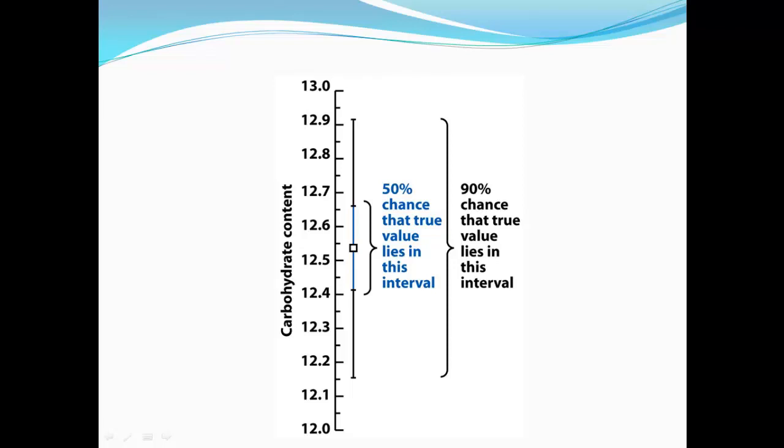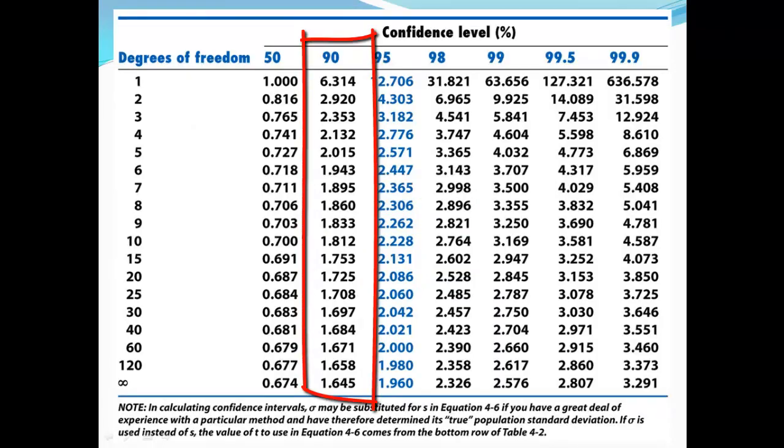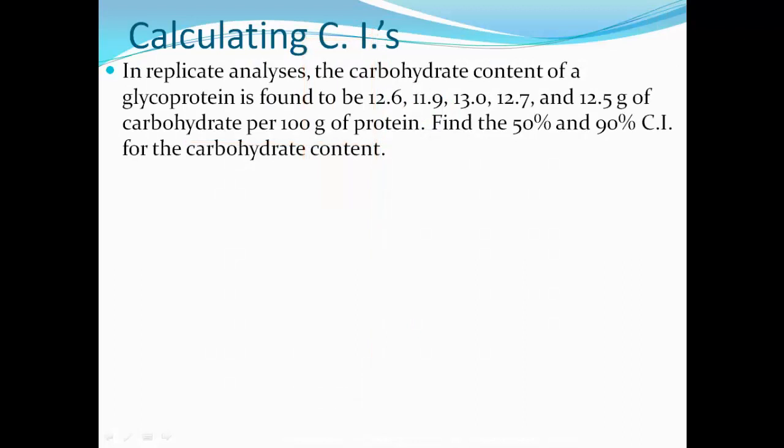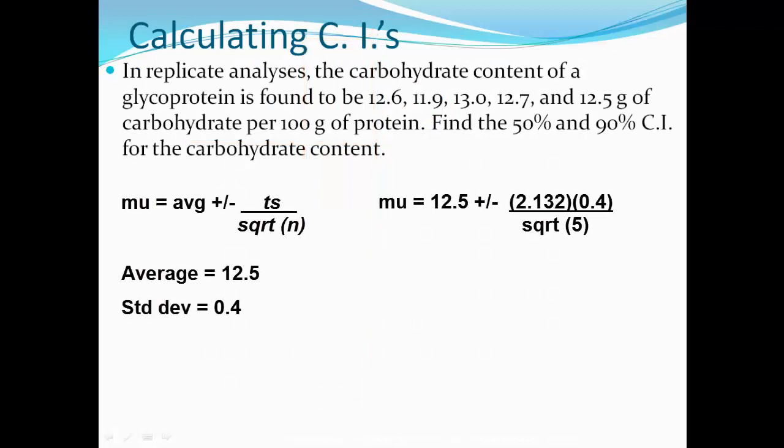If you do the 90% one, all you have to do is use the number for the 90% confidence interval. And that would be 2.132. So you go back to your equation. And you do 2.132 times 0.4 divided by the square root of 5. And that should give you 12.5, which is your average, plus or minus 0.4. So that means that there's a 90% chance the true value lies within the range of 12.2 all the way up to 12.9.